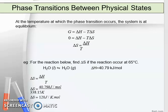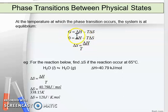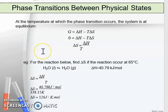Now we proceed to phase transition between physical states. At the temperature of phase transition, the system is at equilibrium, so we set Gibbs free energy equal to zero. We know that Gibbs free energy equals enthalpy of the system minus temperature times entropy of the system. Note that entropy of the system equals delta H over T, whereas entropy of the surroundings equals negative delta H over T.